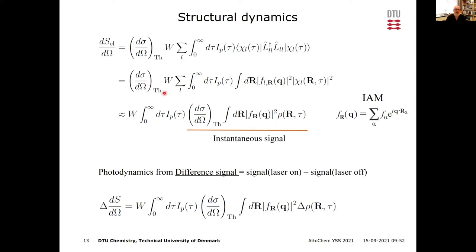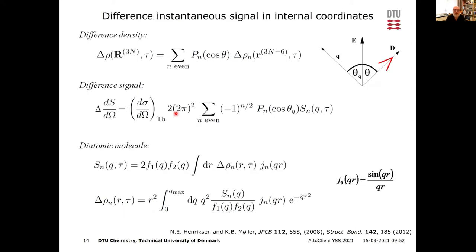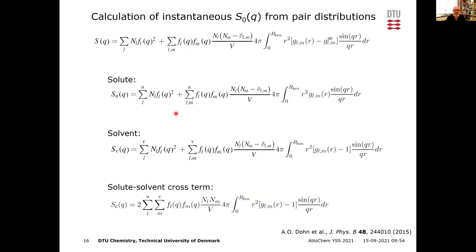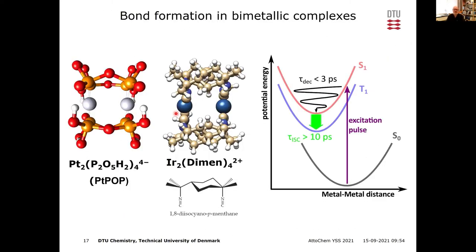This is what we call the instantaneous signal, and everything I present must afterward be averaged over the extension of the X-ray field. Let me now show how this actually works in practice, with some chemical bond formation examples. We studied two very similar molecules.